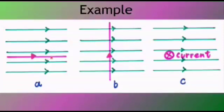So there will be no force acting on the current carrying conductor. If current is flowing in the same direction in which the magnetic field lines are going, force will be zero here.